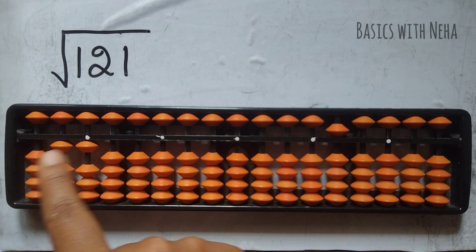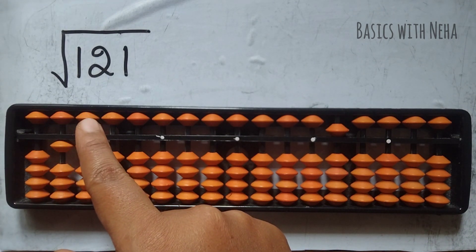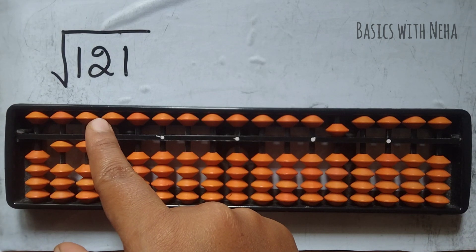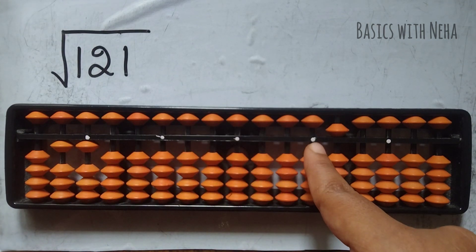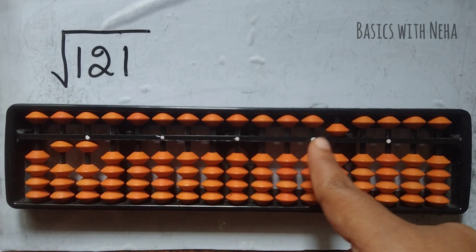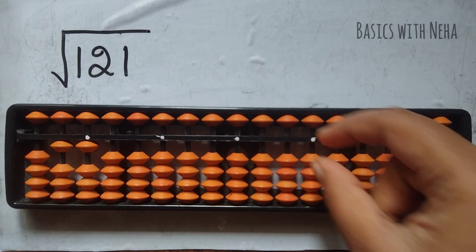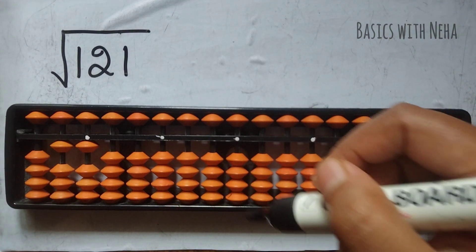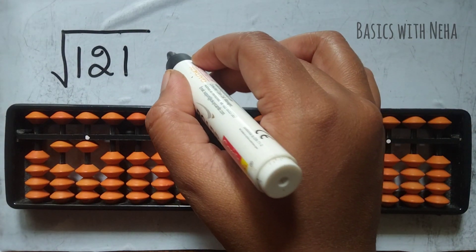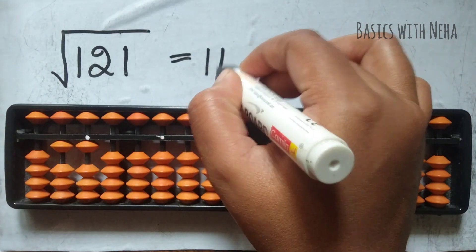Now I have 11. One squared is one, one half is 0.5, so it will be 0.5. I have everything cleared on the right part of my tool, so the answer to this question is 11.